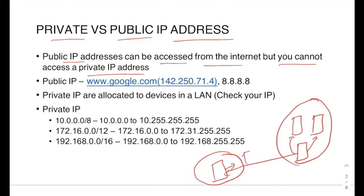Typically you will have routers in between networks. Within each LAN you will have one or more routers, and these routers typically will have a public IP address, which helps in communicating between two different LANs. Some examples of public IP addresses: google.com is a public website with a public IP address of 142.250.71.4. Another public IP address is 8.8.8.8, which is the IP address of the Google DNS server. Private IP addresses are allocated to devices within a LAN, so if you check your IP address, typically it will be a private IP address.